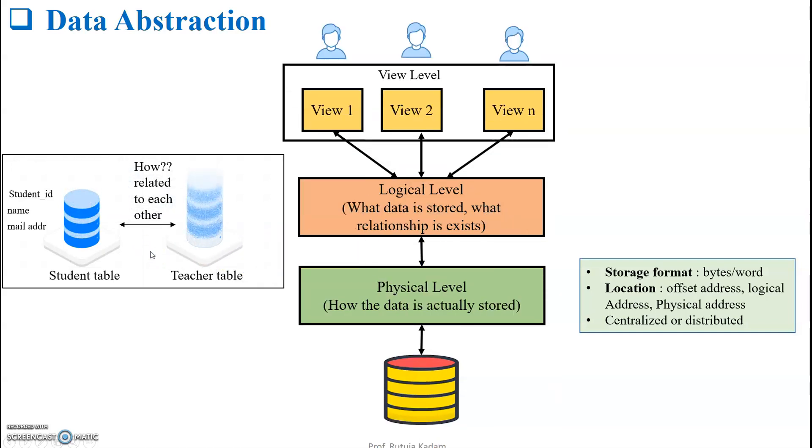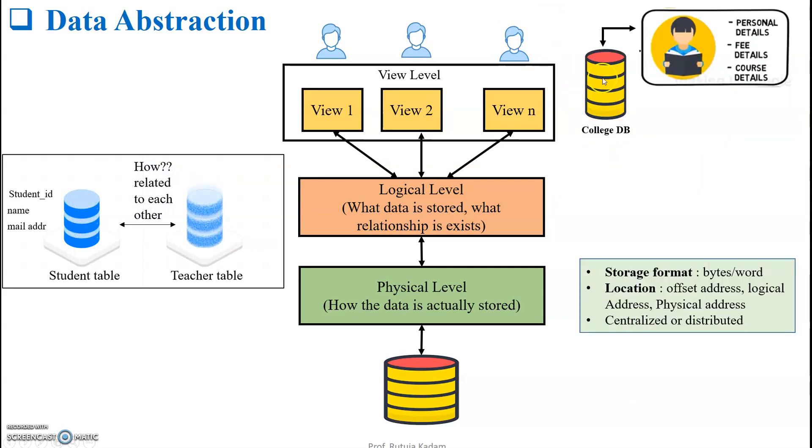Then comes the last one, the view level. In view level, different views are created of the same database which can be accessed by different users. Let's say there is a college database. This database can be accessed by the student, and the fields it can access are personal details, fee details, and courses. Similarly, the same college database can be accessed by the teacher wherein it can access personal details, student attendance, and student results. The fields are different that can be accessed by different users - the student and the teacher. So for the same database, different views are created for different users.